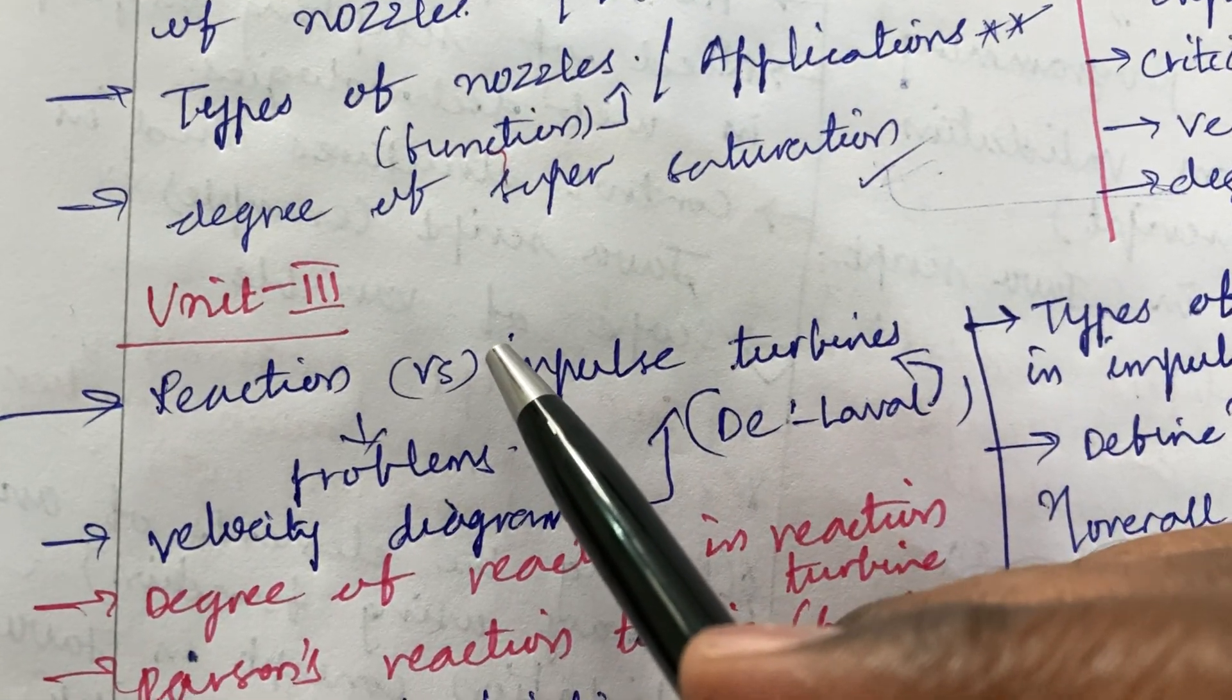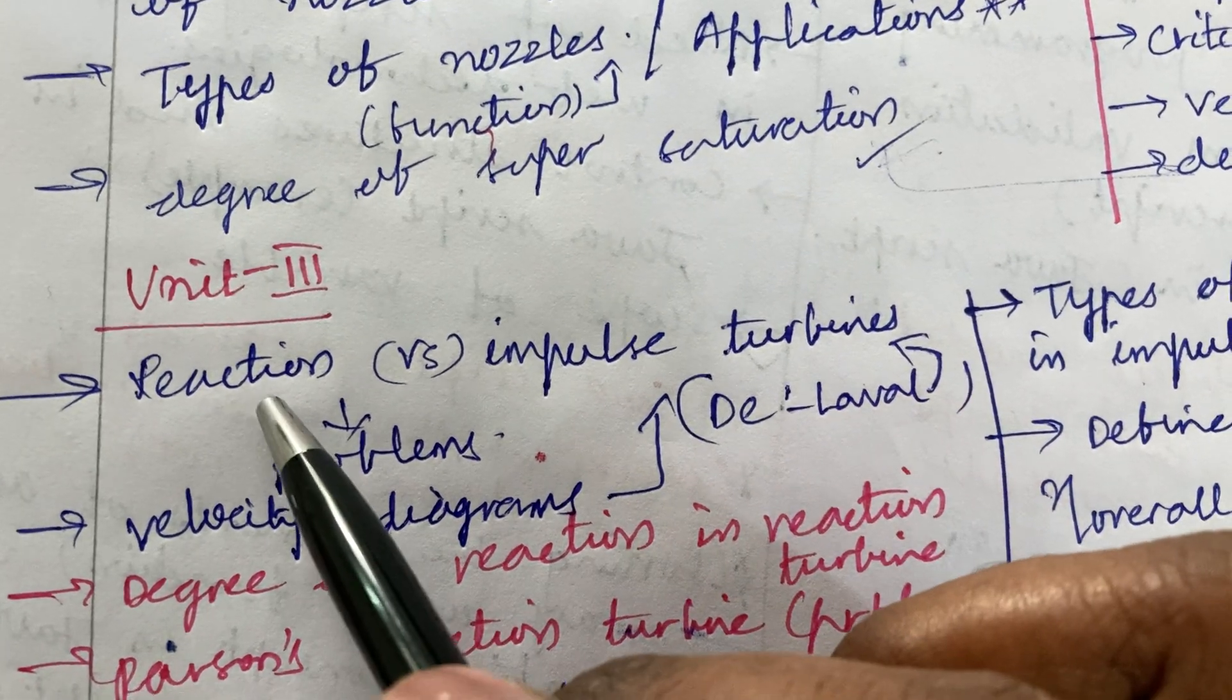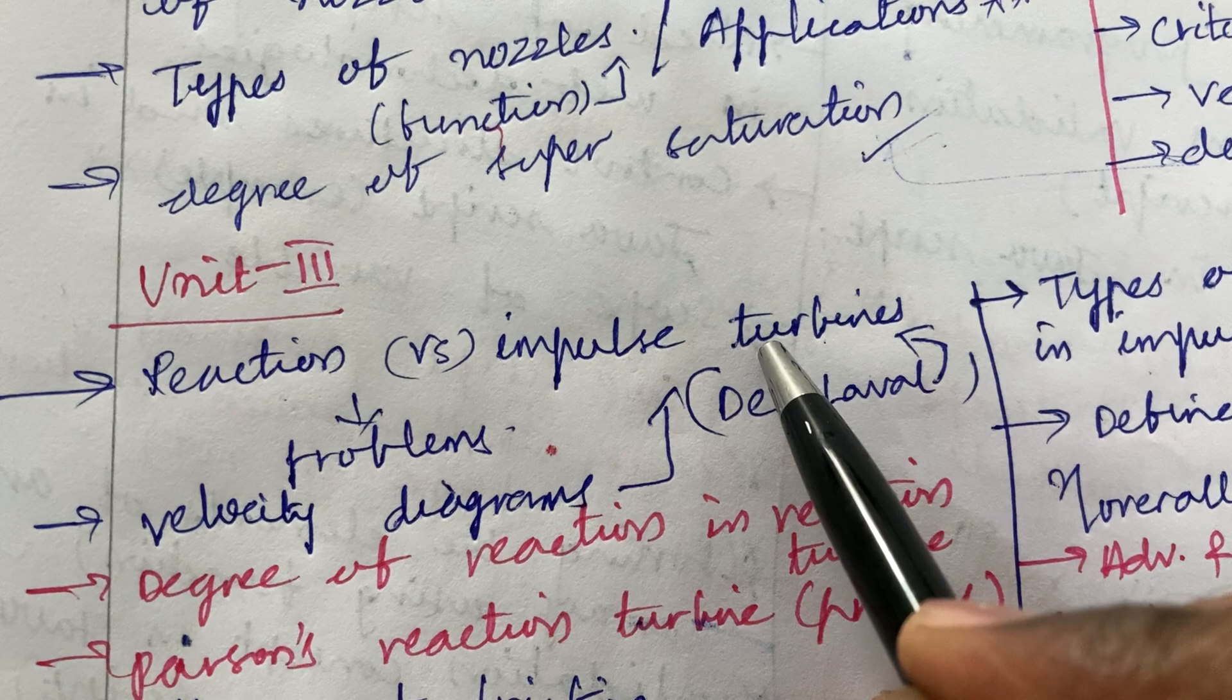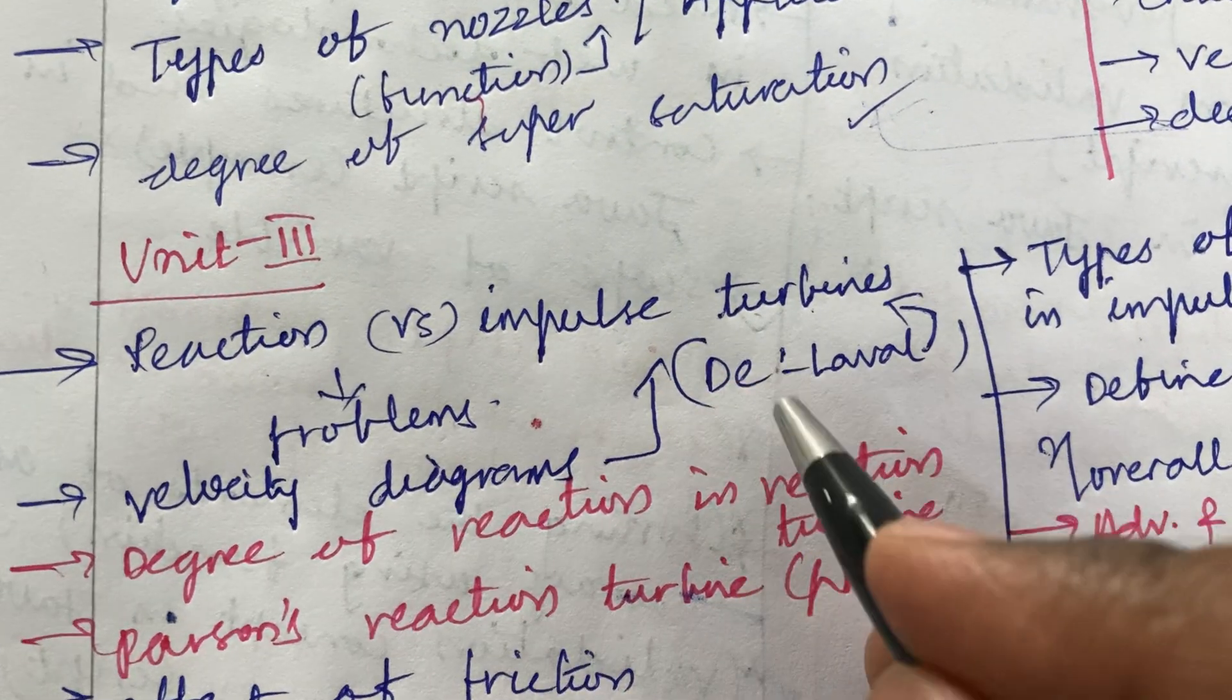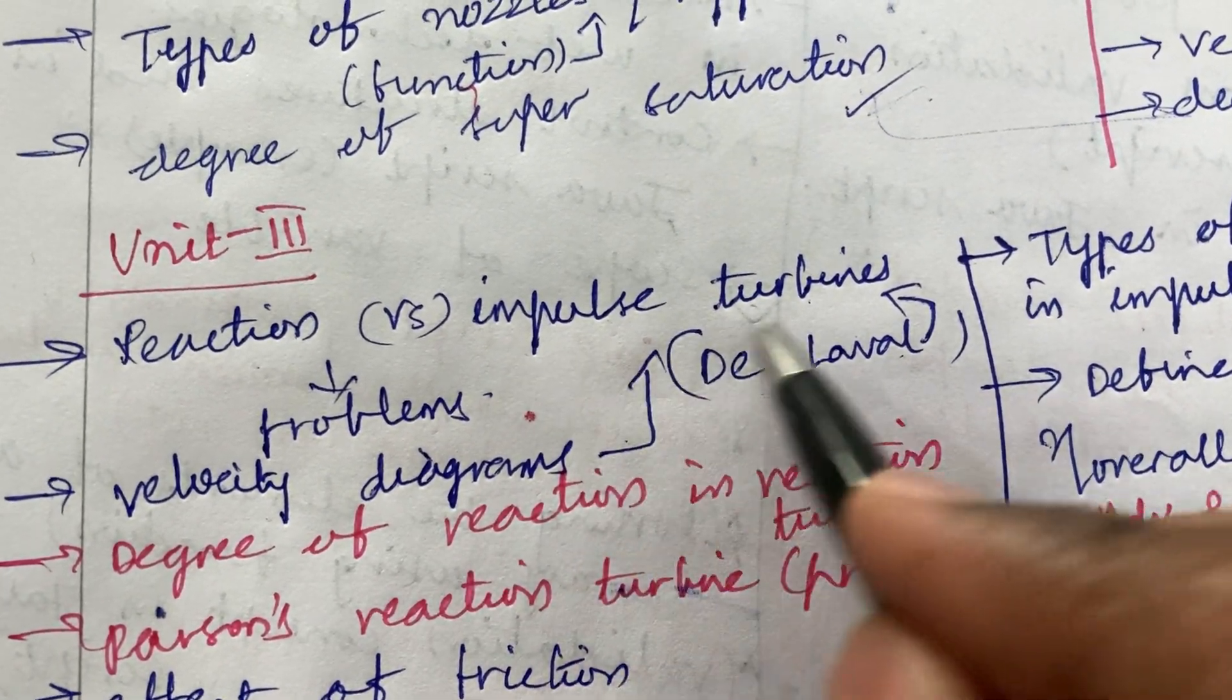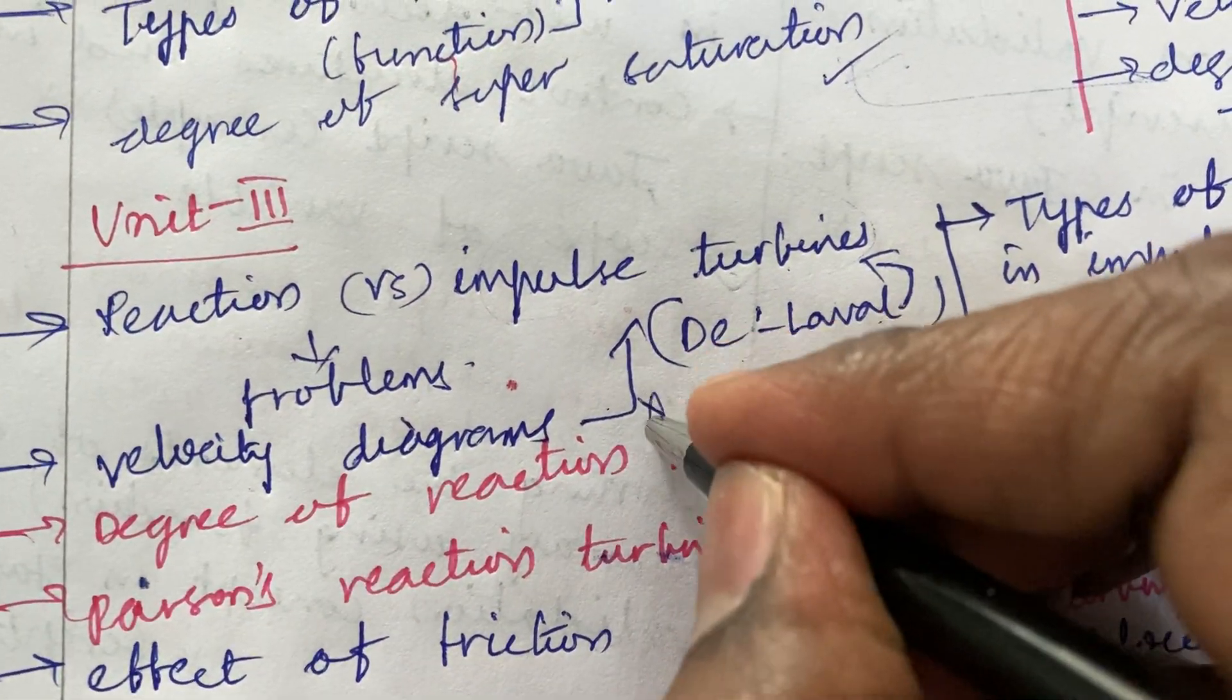Later jump into the third unit - it is also too lengthy in structure. It's all about the turbines, the differences between reaction as well as impulse turbine as well as their working principle along with the problems are very very important here students. De Laval turbines and the velocity diagrams of a single stage impulse turbine, impulse turbine is also said to be a top most question this time.